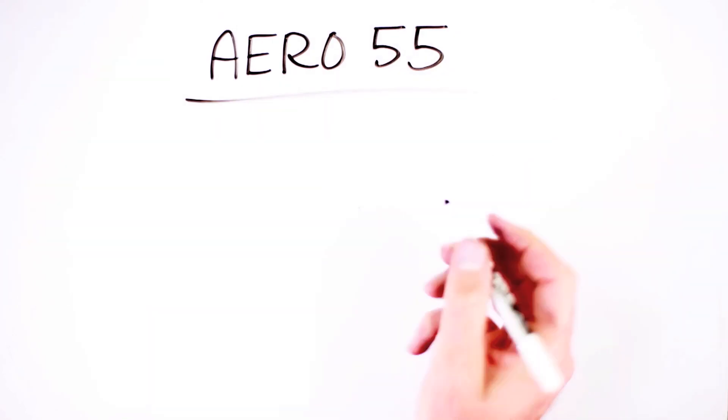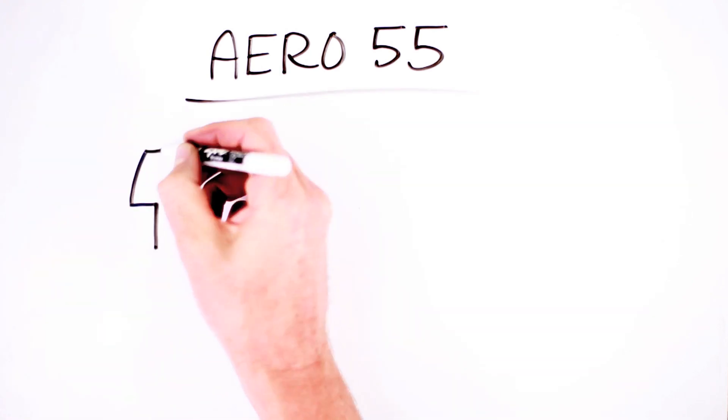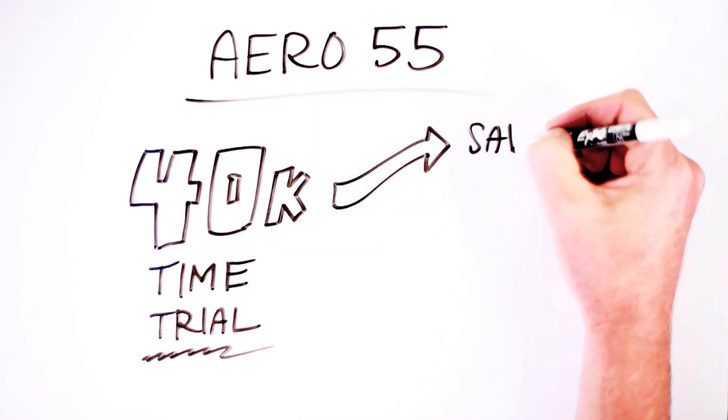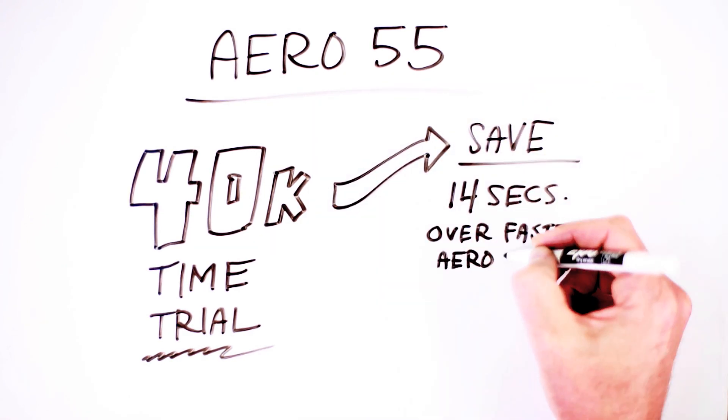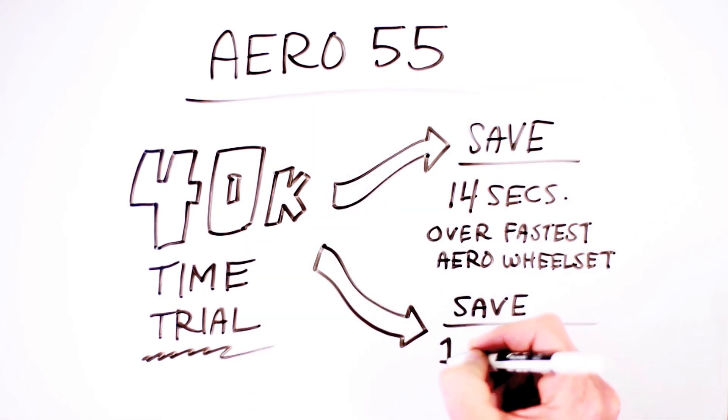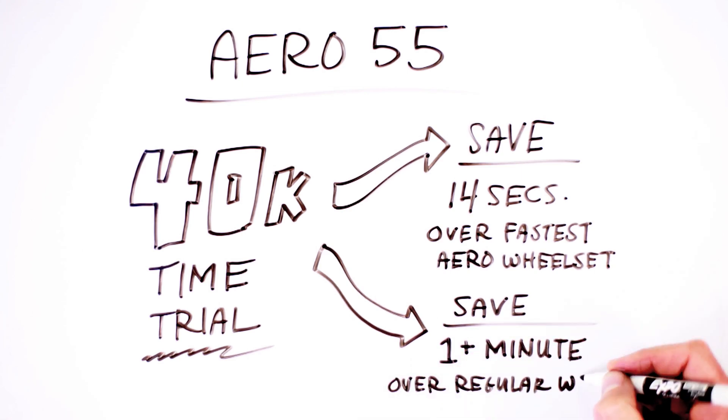The EC90 Aero 55 is the fastest road wheelset on the market today, and we believe the perfect balance of aerodynamics, weight, and durability. If you ride these wheels in a 40-kilometer time trial, you'll save 14 seconds over the next fastest aero road wheelset, and as much as a minute over a standard 32-spoke wheelset. Now that is a big boost of free speed.